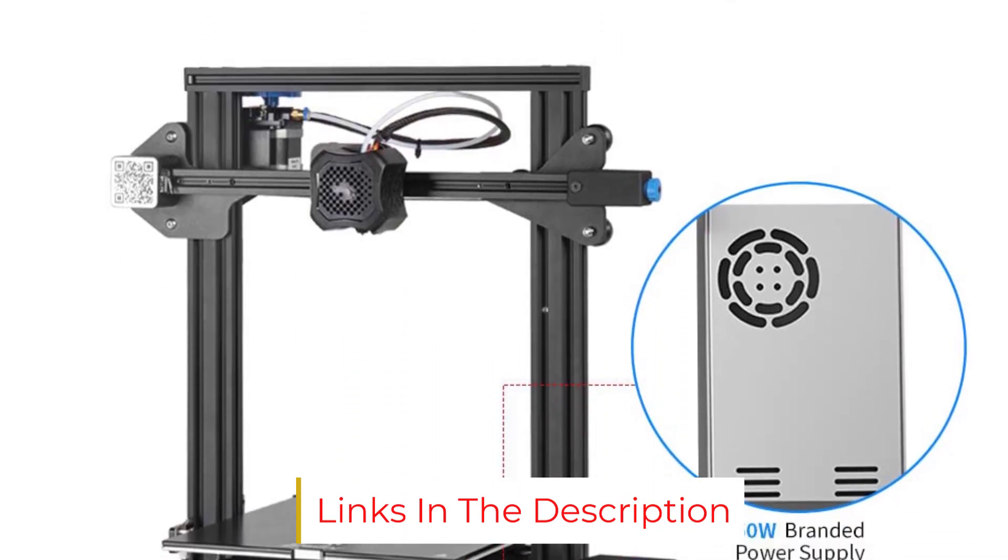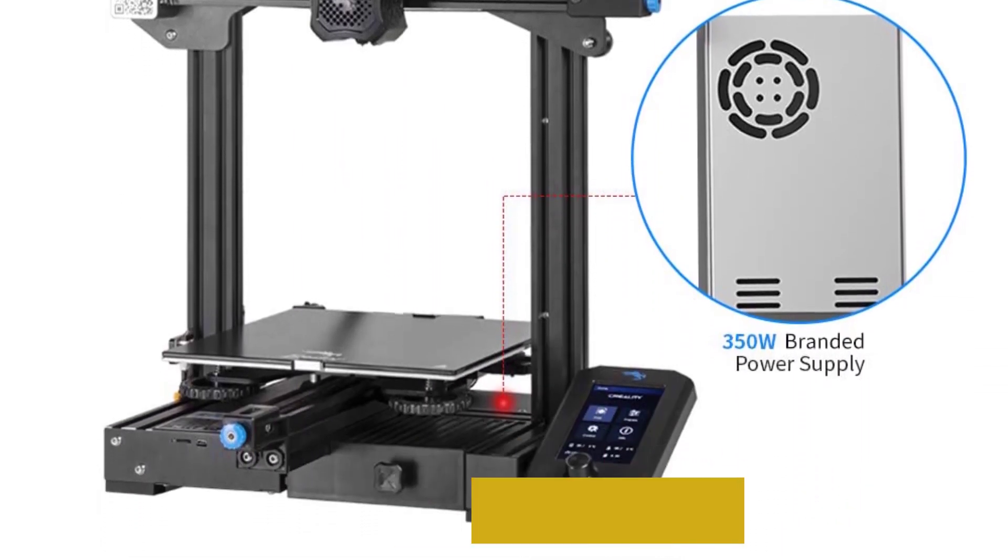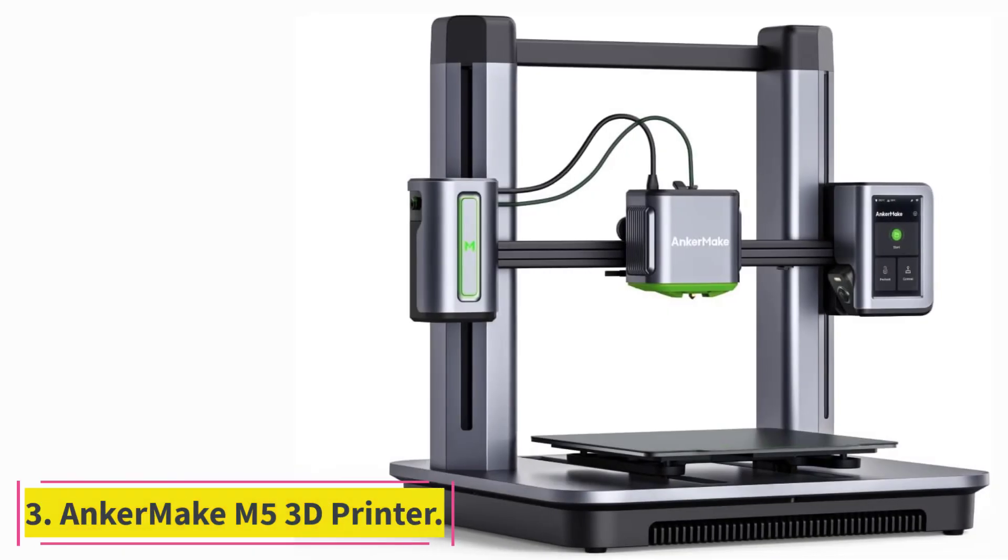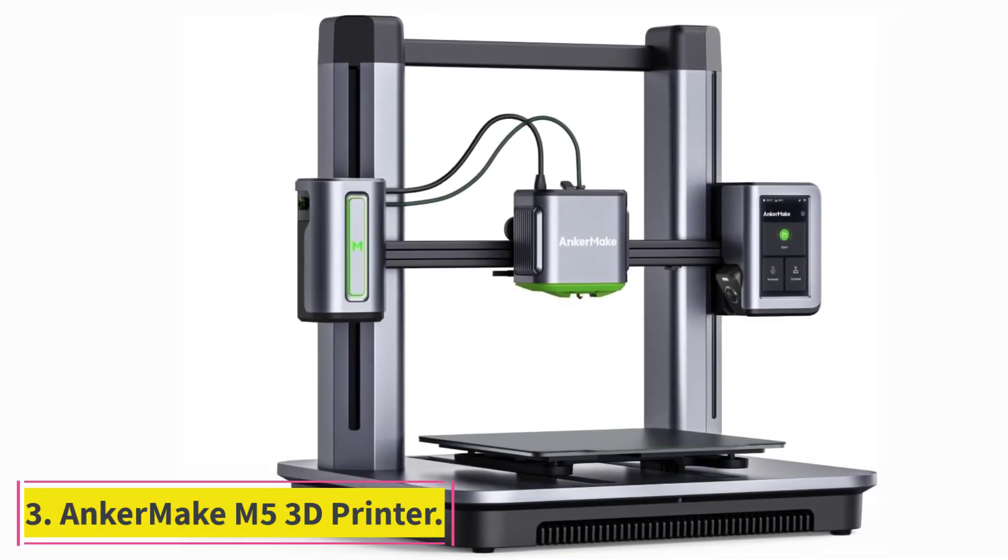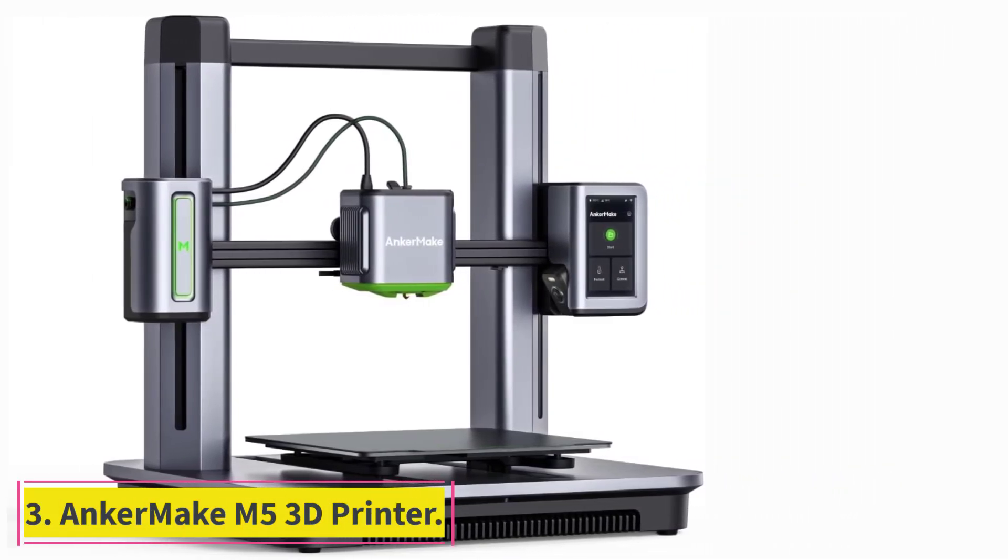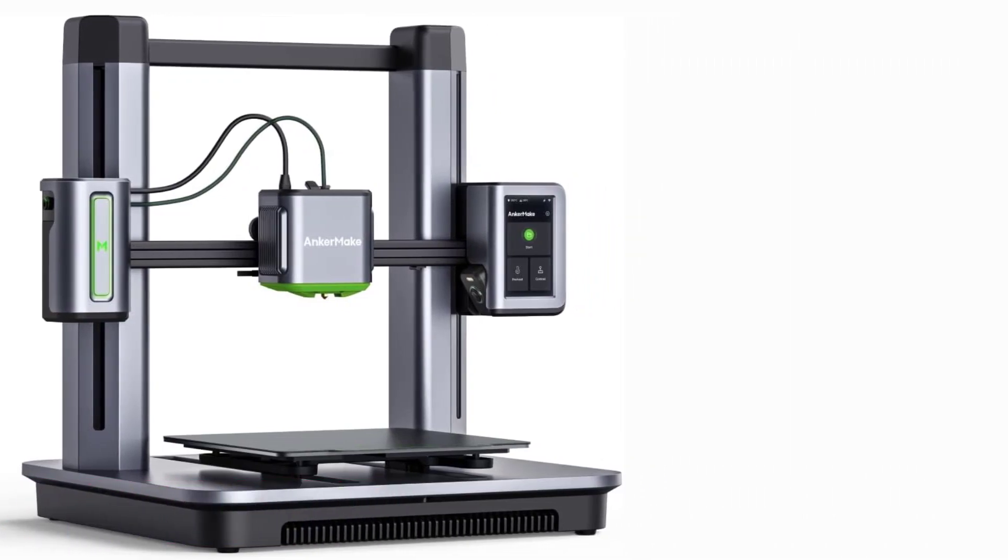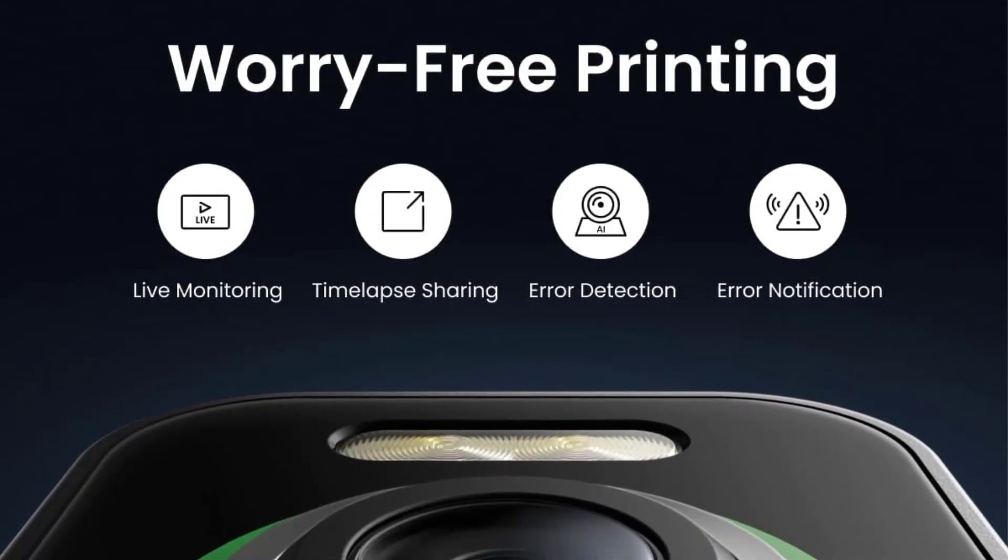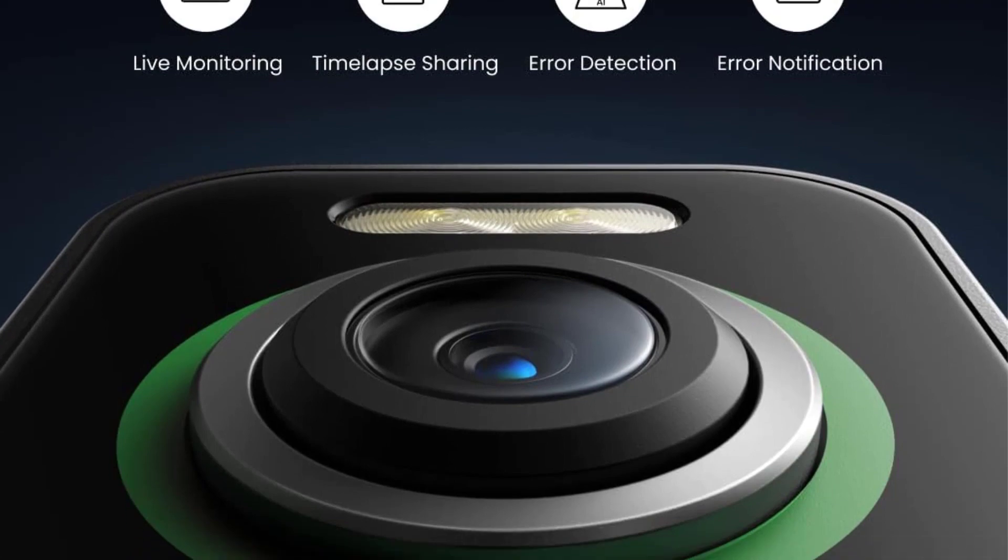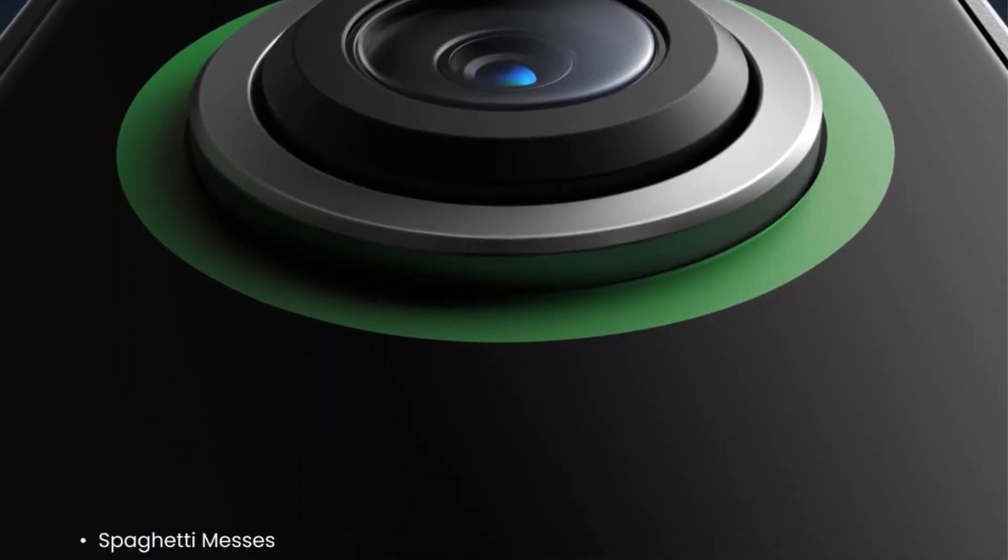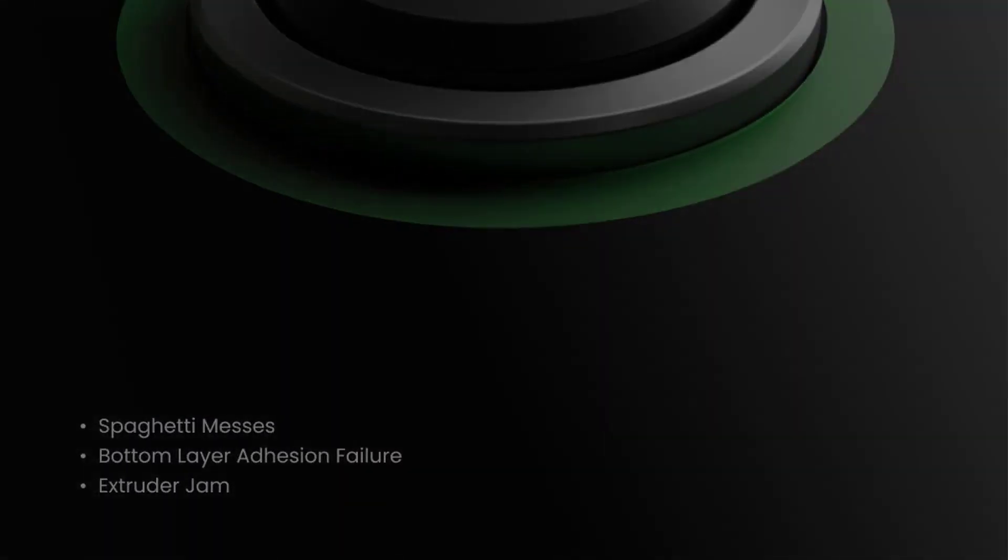Here are more of the best 3D printers for beginners. At Number 3, AnkerMake M5 3D Printer. The AnkerMake M5 3D printer is a smart choice if speed is your priority. It prints at 250 mm per second, five times faster than some other 3D printers.